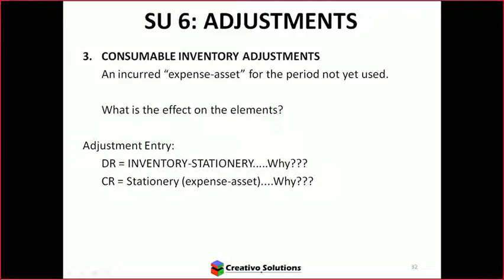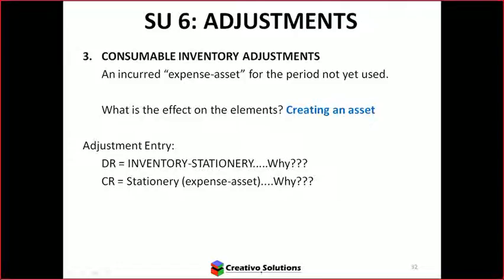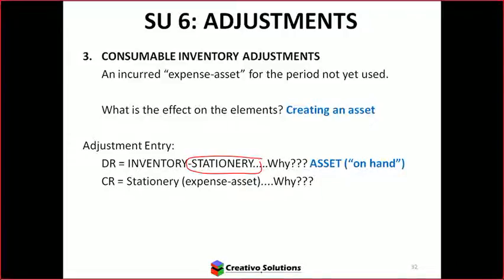Next one, Brogan. Consumable inventory — what is this? I think consumable inventory is an asset. Correct. Why? Because it's something that the company owns. Good. They've not used all of the stationery and have kept some for next year. When do adjustments occur? At the end of the financial year. So you'll only ever recognize stationery as stationery on hand — inventory — because you haven't used it, for that one particular day.